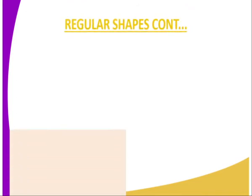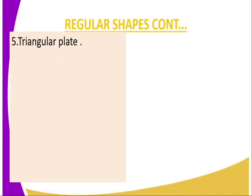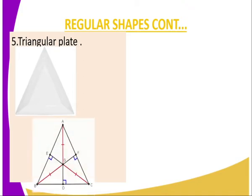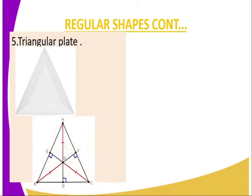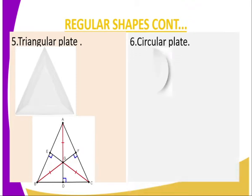For a triangular plate, to get the center of gravity, you construct the perpendicular bisectors of the sides, and their point of intersection becomes the center of gravity.